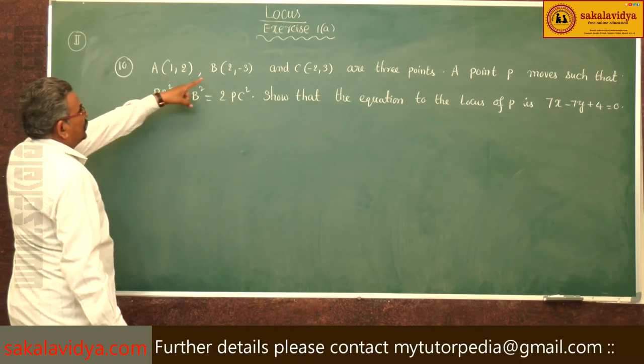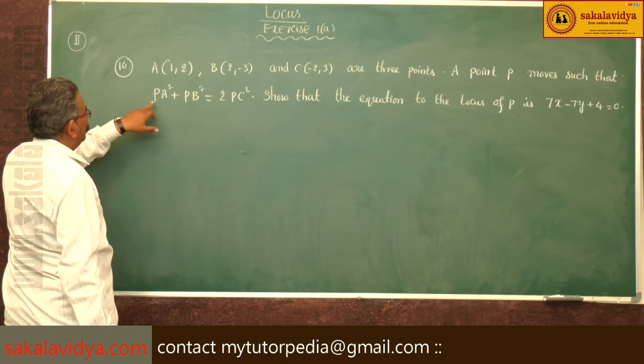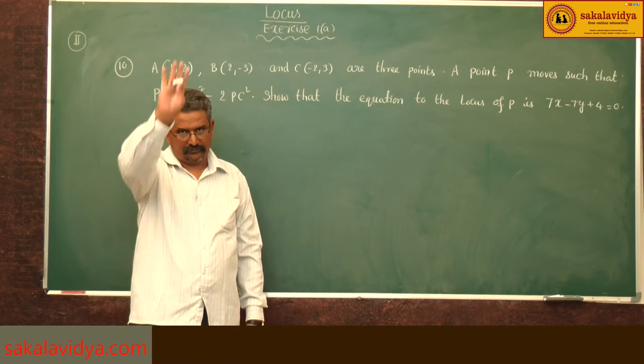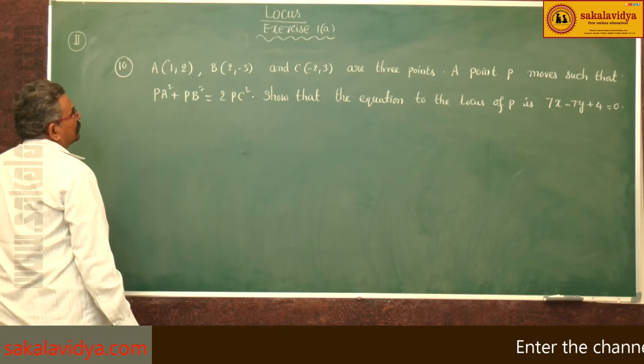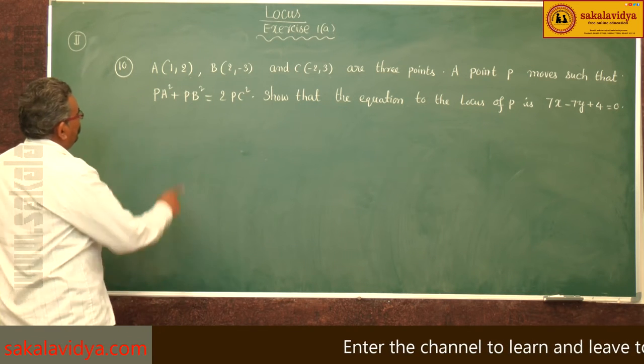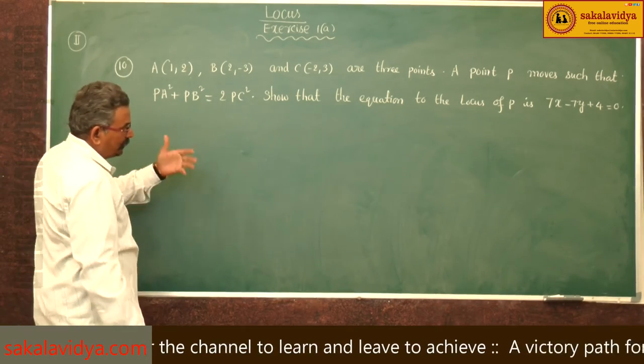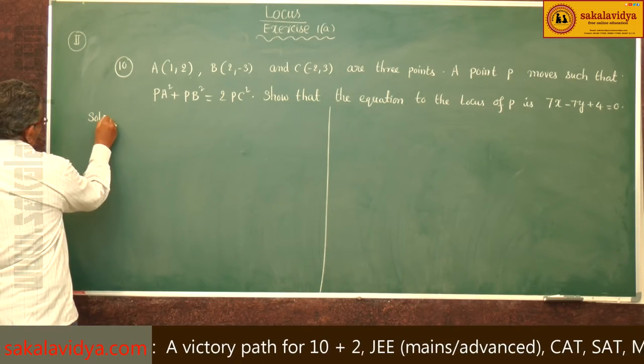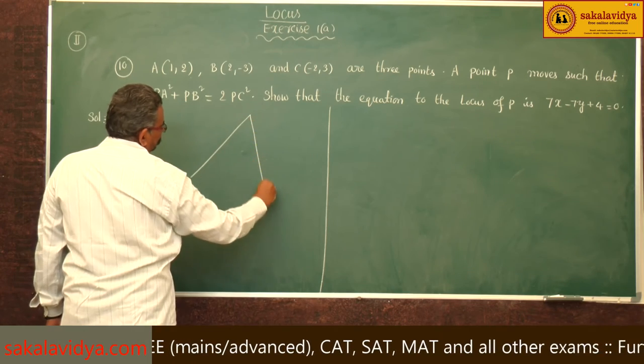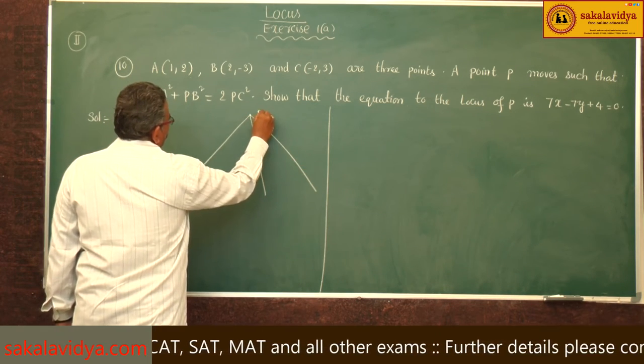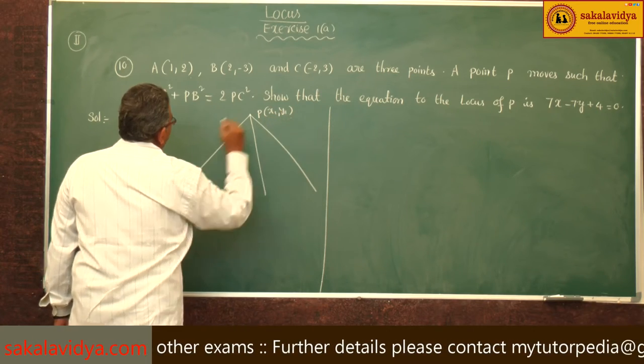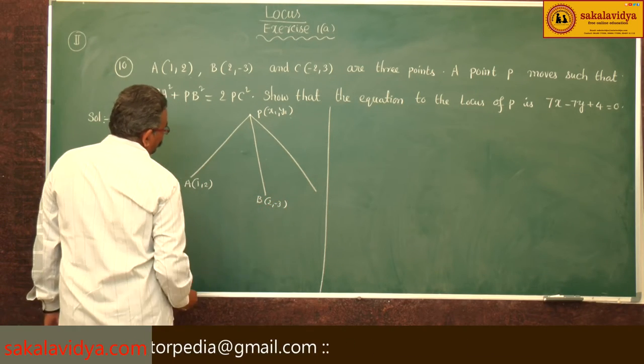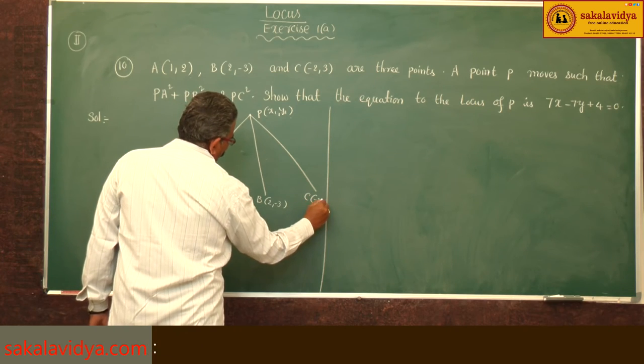Now the locus of P, which moves such that PA² + PB² equals 2PC², we have to find out. Here are three points: P(x₁, y₁), A(1,2), B(2,-3), and C(-2,3) are the given points.